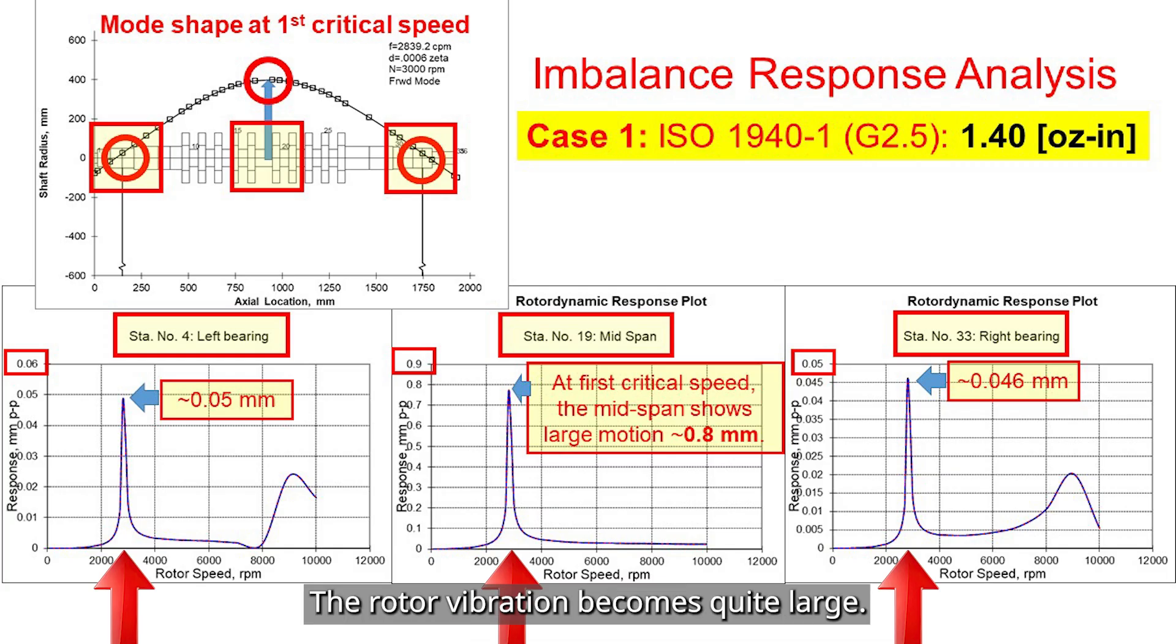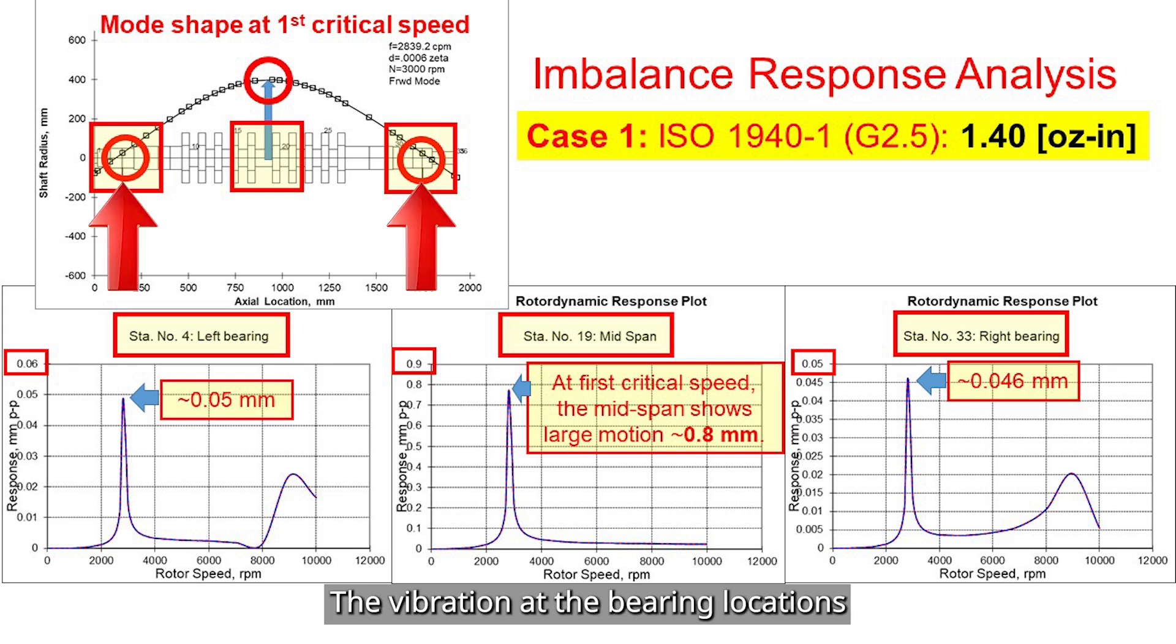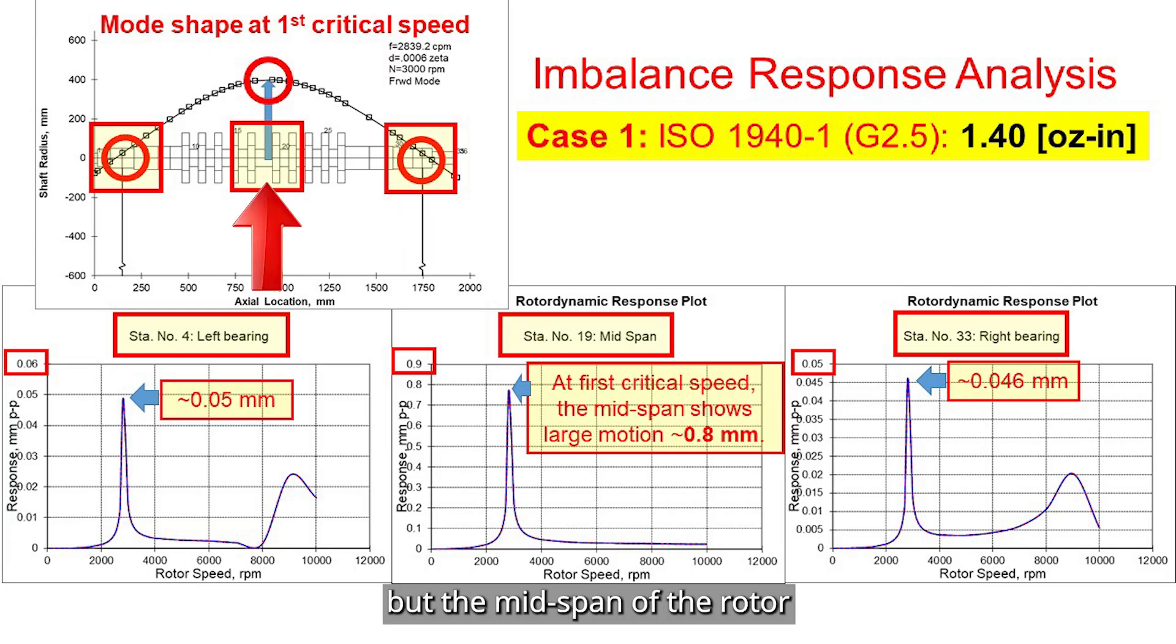This is expected because whenever the operating speeds line up with natural frequencies, the system resonates and the vibration amplitude increases significantly. If we dig a little deeper into the mode shape, we can see something interesting. The vibration at the bearing locations don't move very much. But the mid-span of the rotor shows a much larger motion.